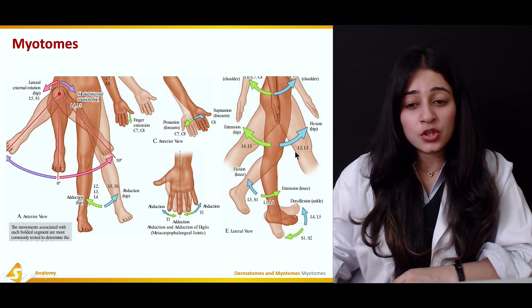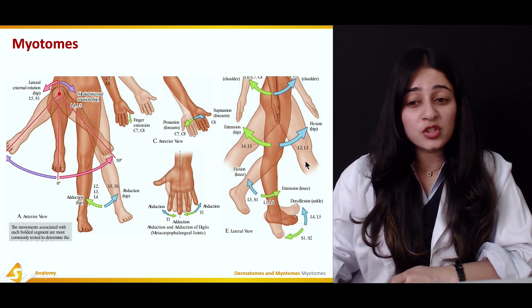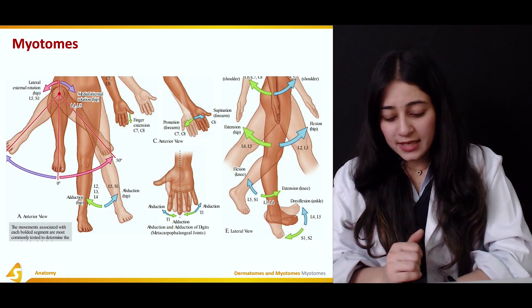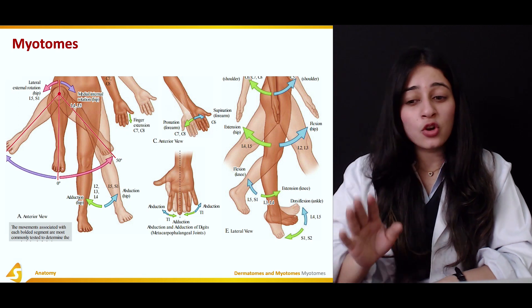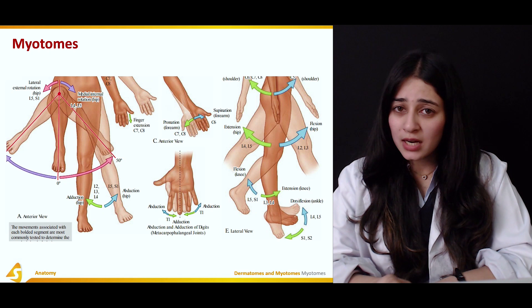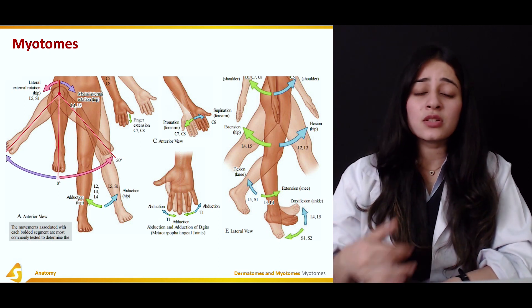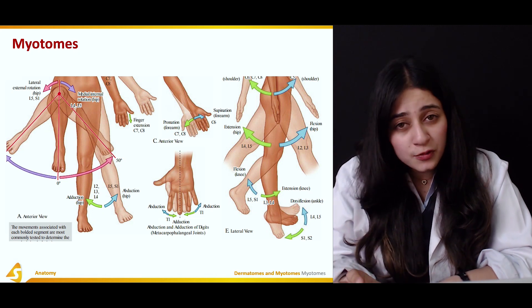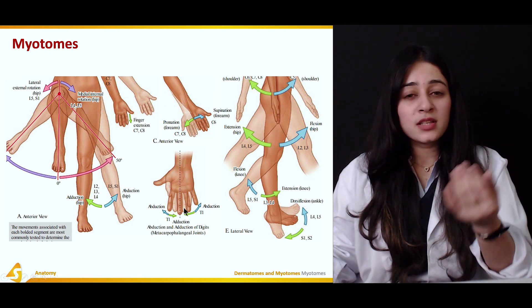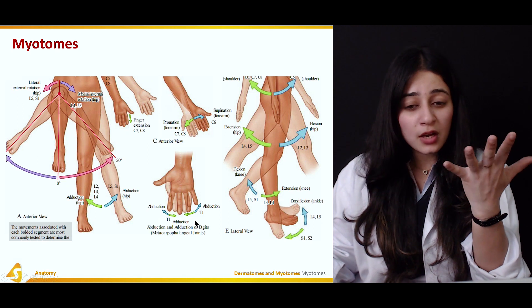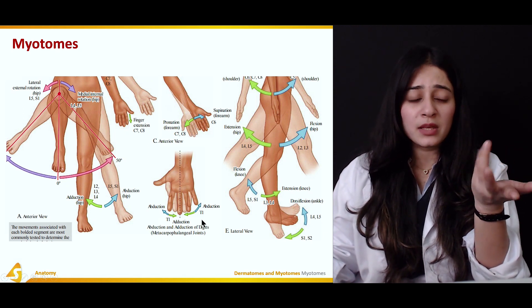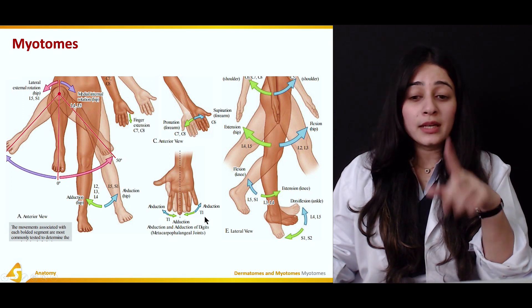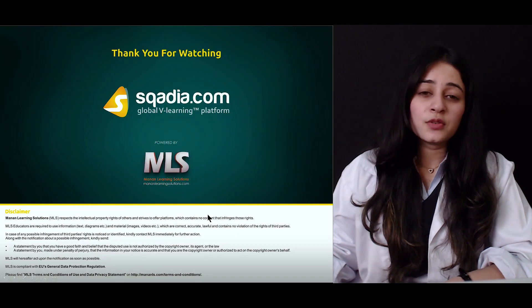Extension of the hip is L4–L5; hip flexion is L2–L3. S1 and S2 perform plantar flexion; dorsiflexion is performed by L4–L5. Abduction of the fingers away from the midline requires the T1 nerve; adduction of the fingers is a normal resting position. These are the motor nerve root fibers supplying specific muscles of the body and performing specific actions.